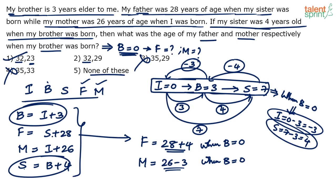The explanation took some time, but once you understand the approach it's a simple question that shouldn't take more than 45 seconds. Using the first and fourth equations we built this timeline, and from the timeline we found father's and mother's age when b = 0. The answer is option 1: 32 and 23.